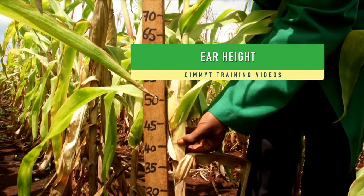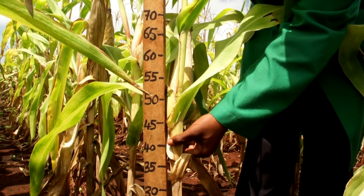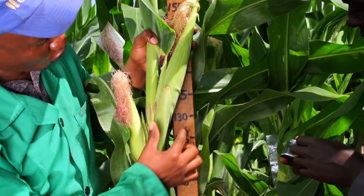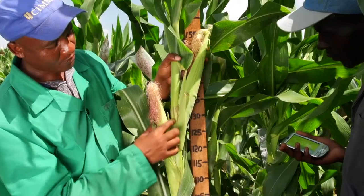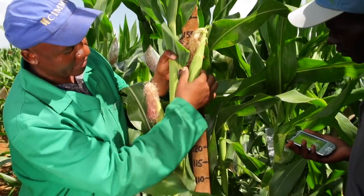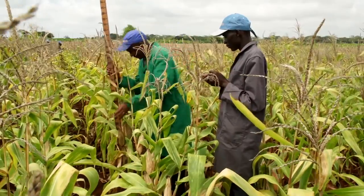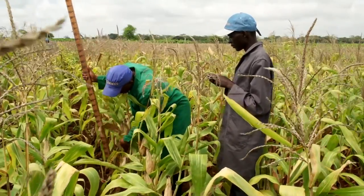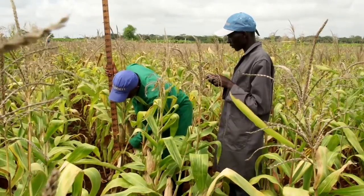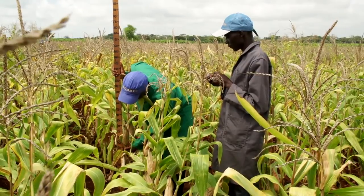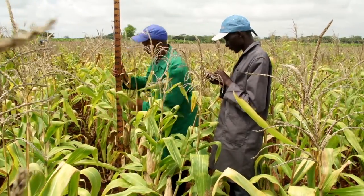Ear height is the distance in centimeters from the base of the plant to the insertion of the uppermost ear. Ear height should be collected from five representative upright plants. Border plants should not be measured. Ear height should be measured approximately four weeks prior to harvest from both optimal and stressed trials.